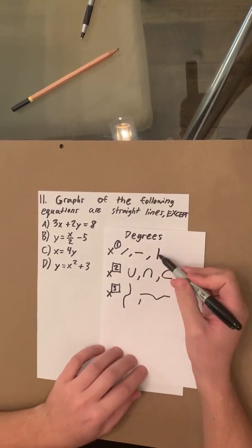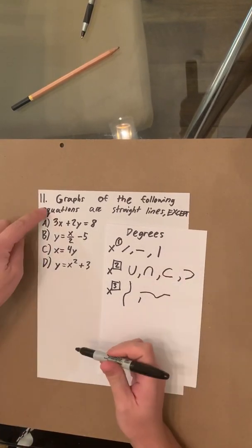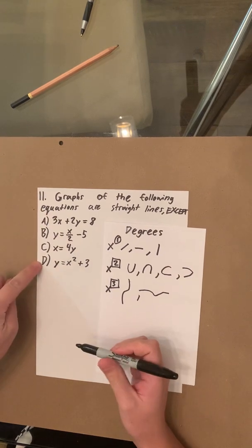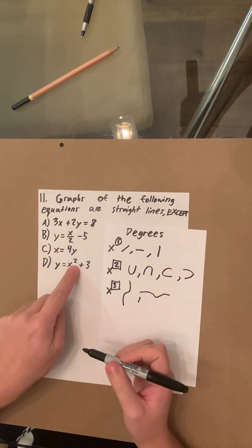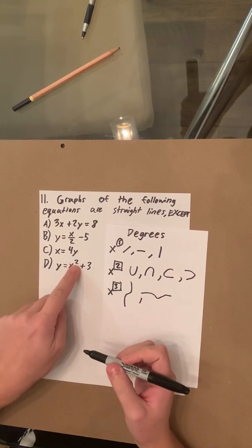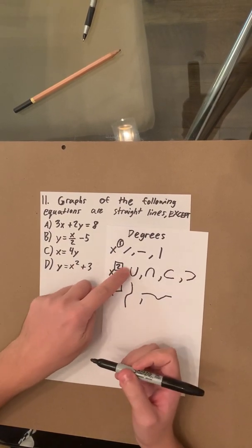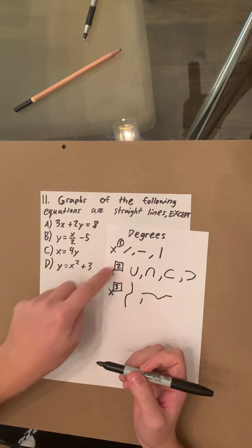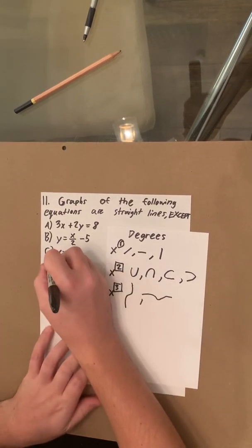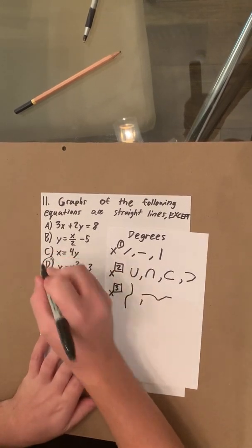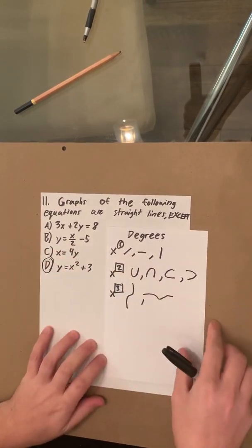So just by going off of this and comparing the answer choices, you can see right away that x squared has a degree of 2, meaning it's going to have a curve in it. So D is your answer.